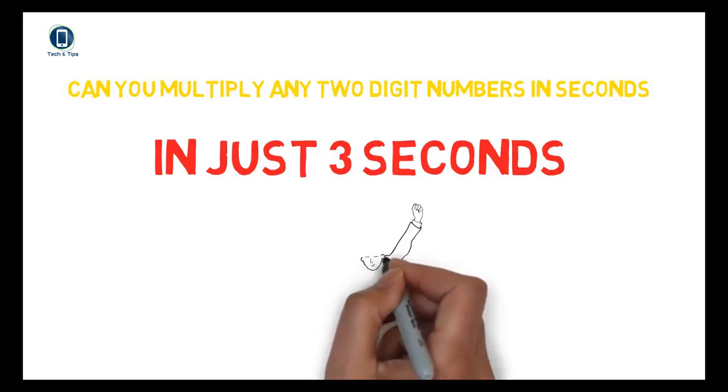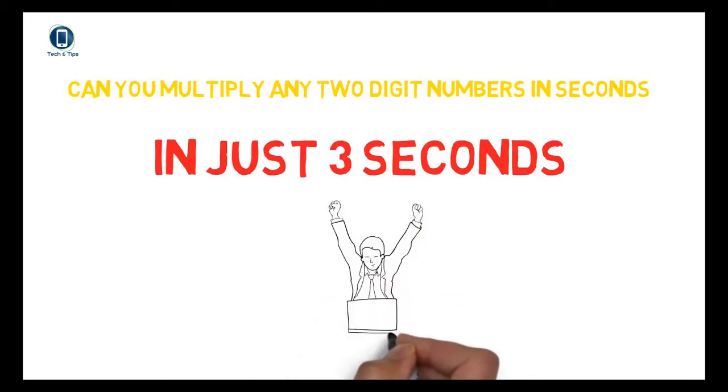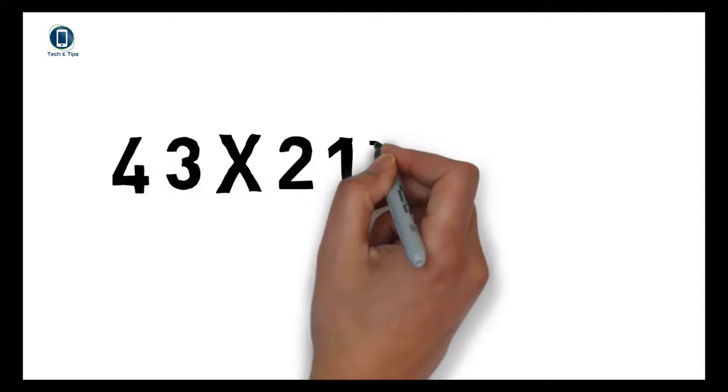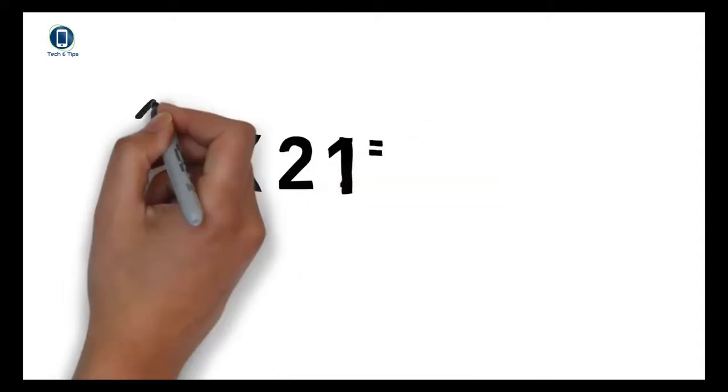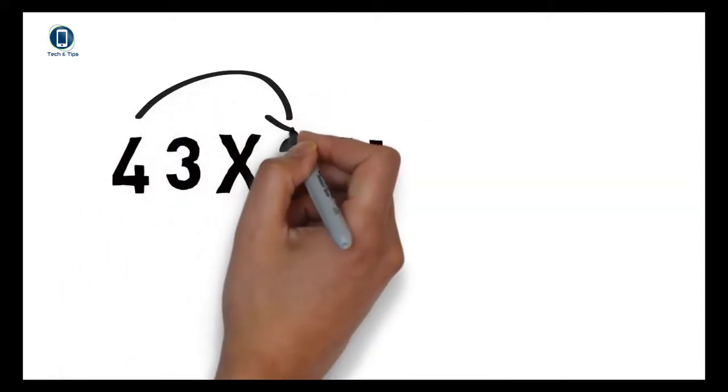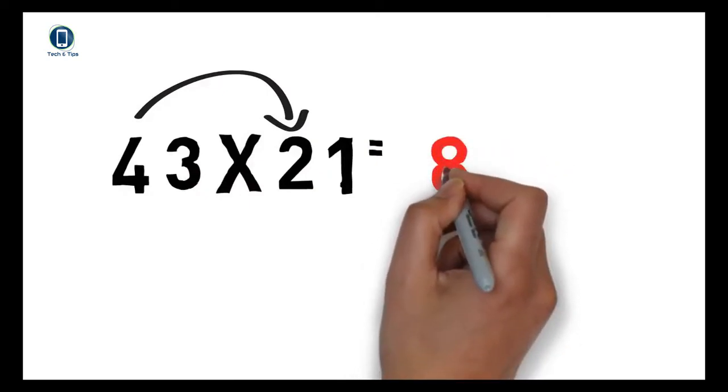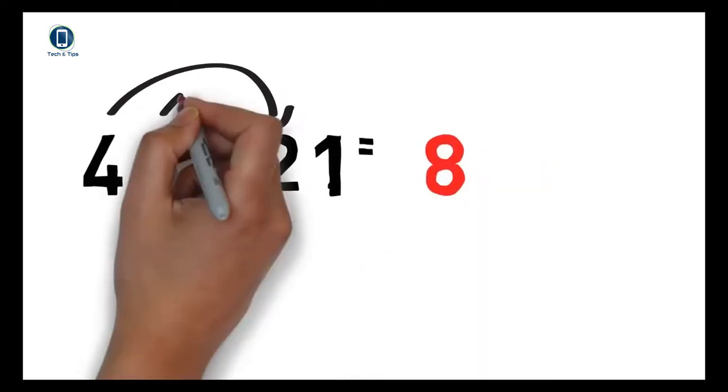video is very important for you. Let's get to our trick. Take an example: 43 × 21. First, multiply the first digit of the first number by the first digit of the second number, that is 8. Write 8 in the hundreds place. Now, the second digit of the first